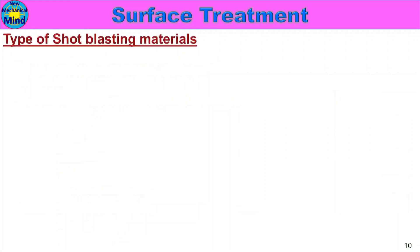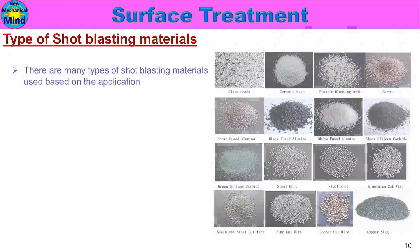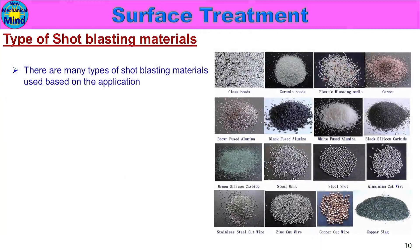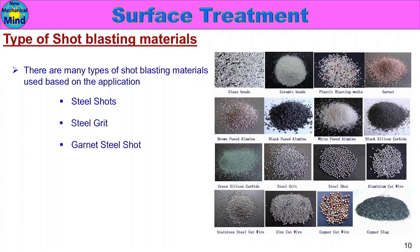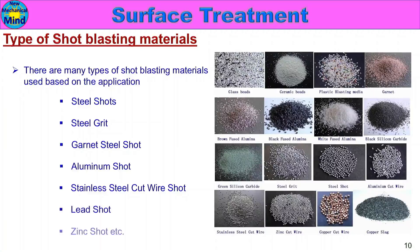Next, we will see the types of shot blasting materials. There are many types of shot blasting materials used based on the application — for debris clearing, burr clearing, rust clearing, contamination clearing, or sharp edge removal. Shot blasting materials include: steel shot, steel grit, garnet, aluminum shot, stainless steel cut wire shot, lead shot, zinc shot, etc. Based on the application, the suitable shot blasting material is selected.